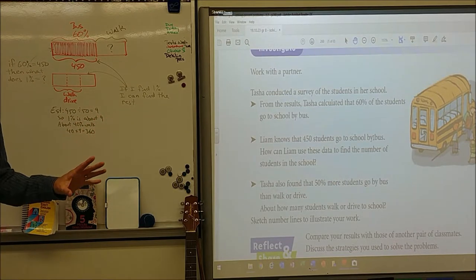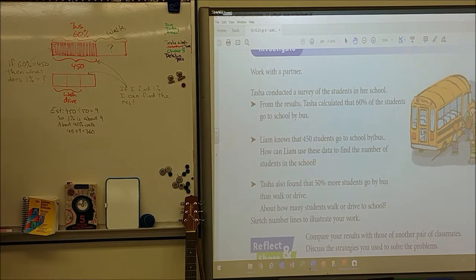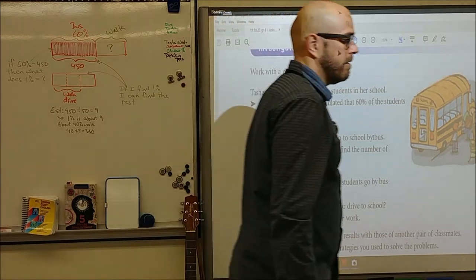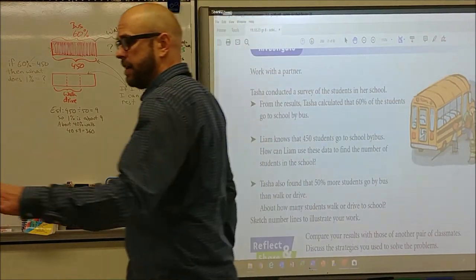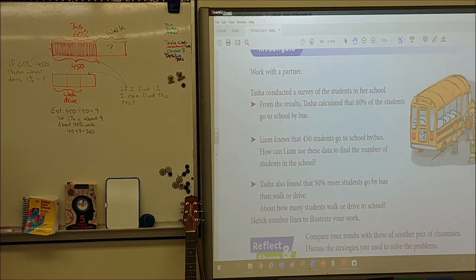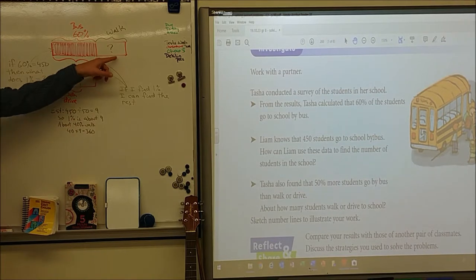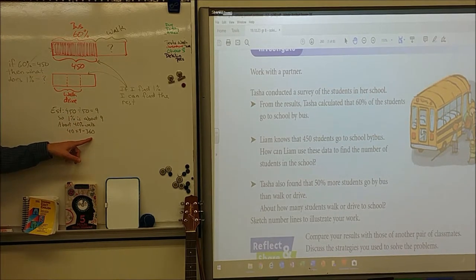So here, I didn't do the work yet. I just did an estimate. I just went 450 divided by 50. Because 50, I thought, was an easier number to divide by than 60. And this is just an estimate after all. So 450 divided by 50 equals 9. So I said, well, if 1% equals about 9, then 40%, that's left, times 9, would be about 360.